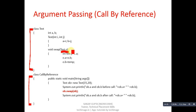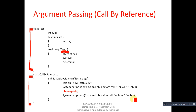Both ob and o are references pointing to the same object. So when we change o.a and o.b, the change will reflect in ob. After the swap method finishes, when System.out.println executes, ob.a and ob.b will print the swapped values. This is the call by reference method, achieved with the help of a class reference.